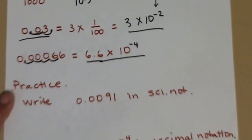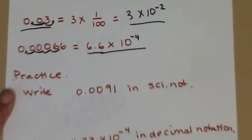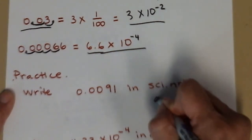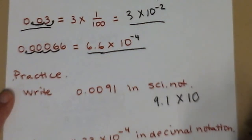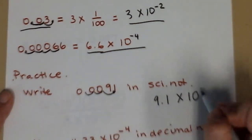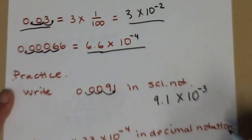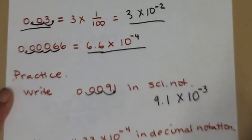Okay? So let's practice. 0.0091, write it in scientific notation. So the number between 1 and 10 will be 9.1 times 10 to the... Let's find its exponent. Start, swoop: 1, 2, 3. 3 to the right. It's a small number, less than 1, so my exponent's negative.